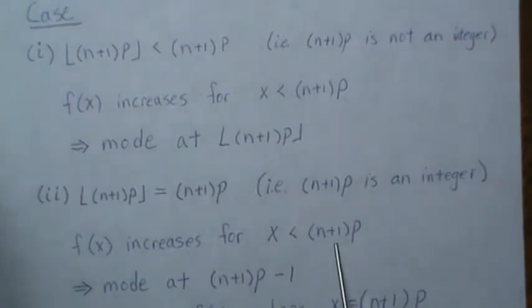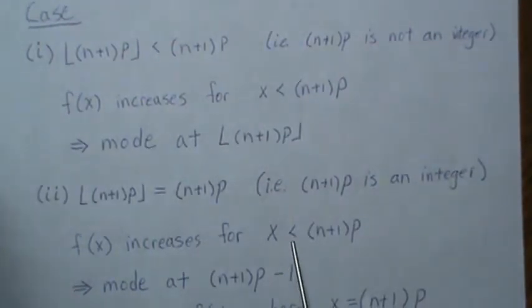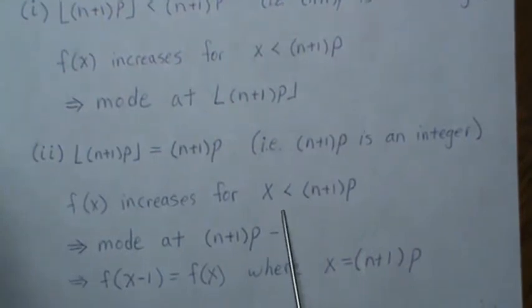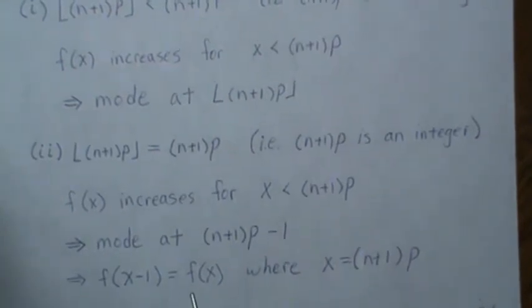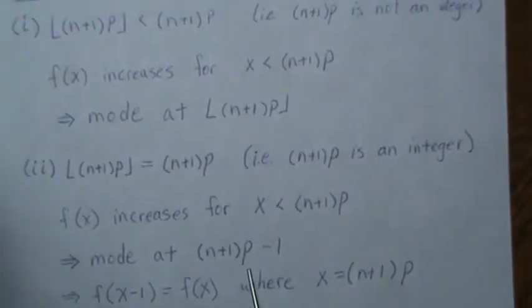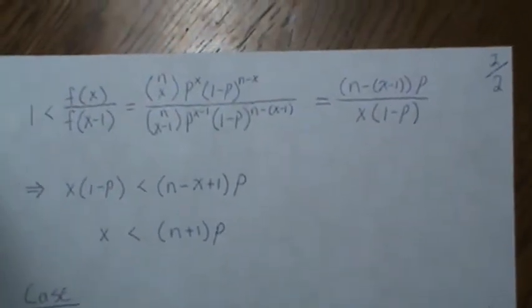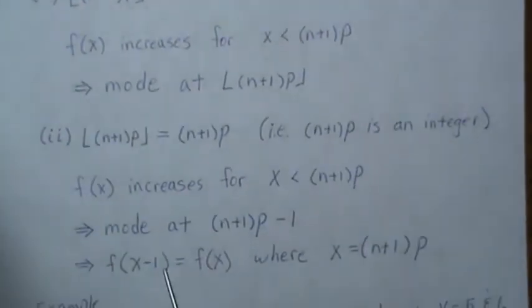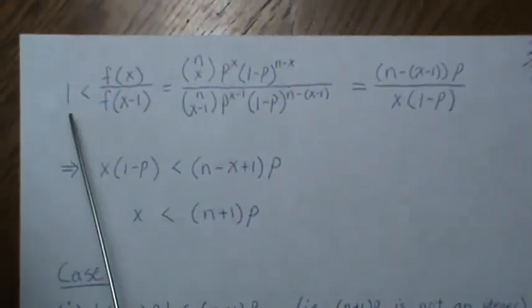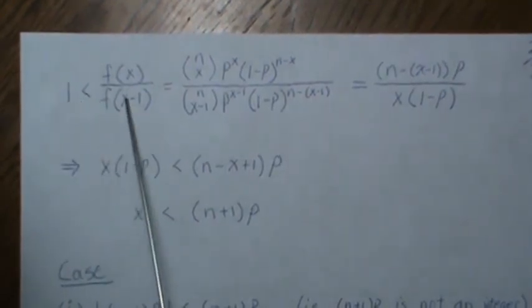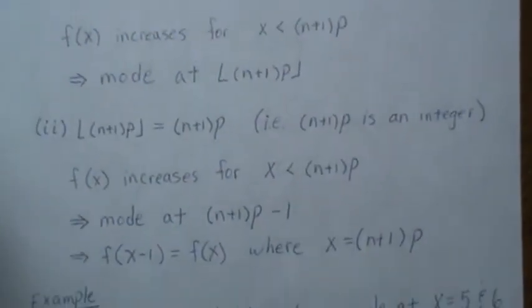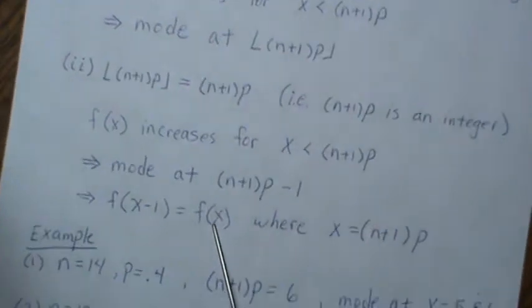But if this is an integer, it can be shown that it actually is equal. Those two become equal, so it's a bimodal distribution. If you take this number and put it back in these equations, you can show that these two have to equal, which means that this equals 1. So we have a bimodal distribution.